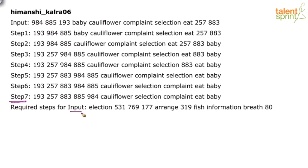A new input is given and we have to find the step-by-step process for it. The first step in machine input-output problems is to look at the last step, because we need to identify the logic behind the output. The first observation is all the numbers are together and all the words are together — numbers followed by words.